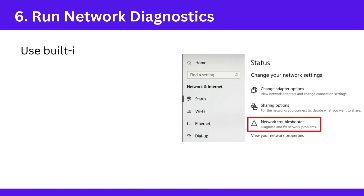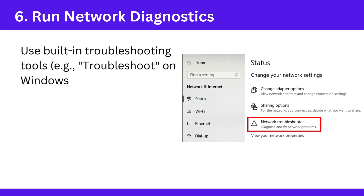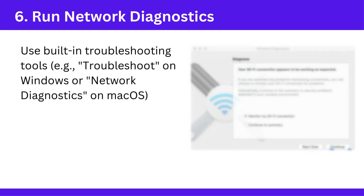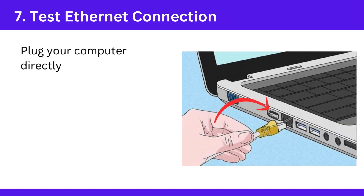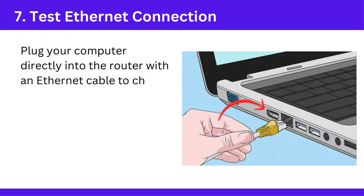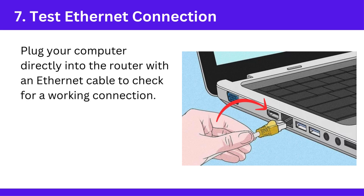Step 6: Run network diagnostics. Use built-in troubleshooting tools — e.g., Troubleshoot on Windows or Network Diagnostics on macOS — to identify potential problems. Step 7: Test Ethernet connection. Plug your computer directly into the router with an ethernet cable to check for a working connection.